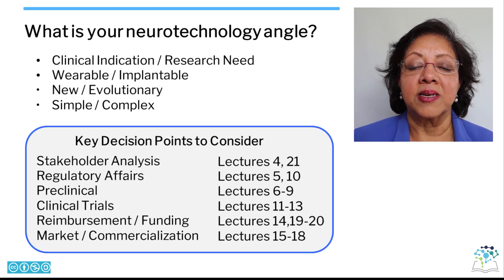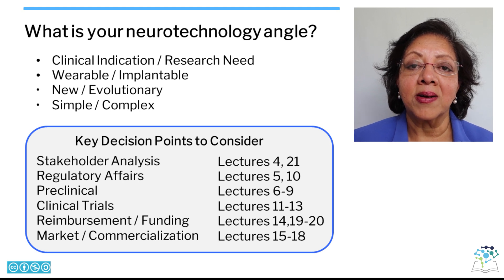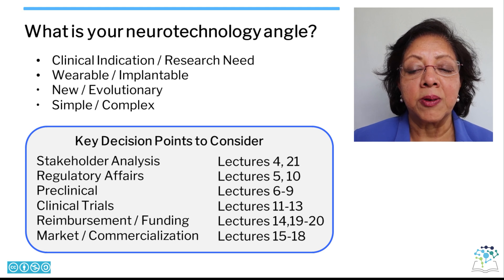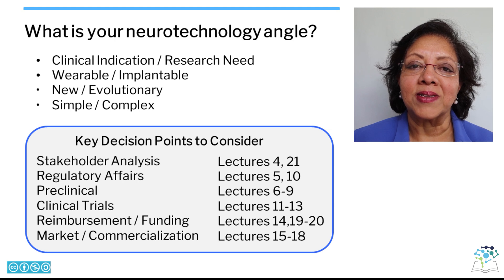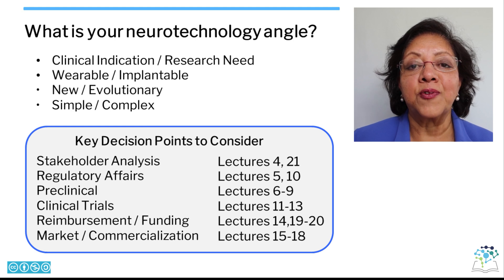There are many other items that must be considered. Most importantly, the technology should address the unmet needs for a clinical indication or for research advancement. Another key feature is to understand the level of invasiveness required for interfacing with the nervous system — will it be a wearable or an implantable device? Is your device completely new or does it build on existing technologies? Is your technology well-contained and simple to deploy or part of a complex system? Answers to such questions will help you plan the scope of your effort and guide you in assembling a team that can address technical, regulatory, reimbursement, and business considerations necessary for deployment and commercial success.